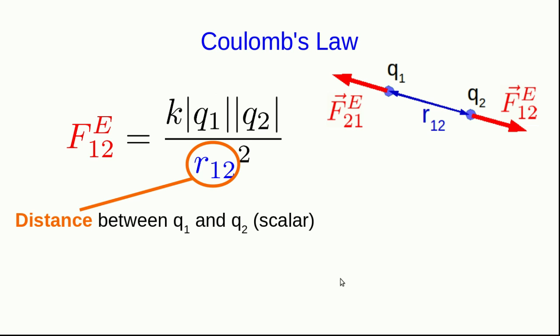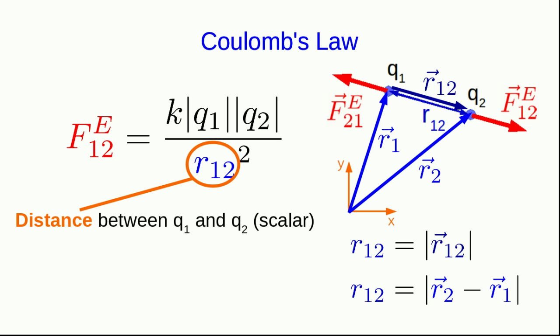Keeping with the theme of what is a vector and what isn't, note that r12 in the denominator here is the distance between charges q1 and q2, and like any distance, it is by definition a scalar. Now, that distance is the magnitude of a displacement vector pointing from q1 to q2, and of course, if you set up axes, you can define the positions of charge 1 and charge 2, and then that displacement vector is just going to be r2 minus r1, and so this distance is the magnitude of that vector subtraction.